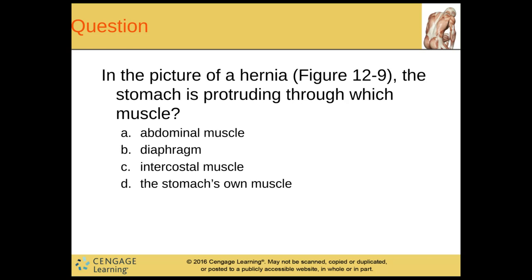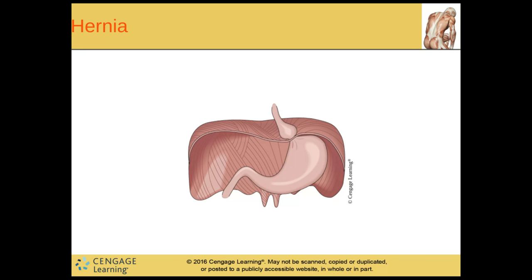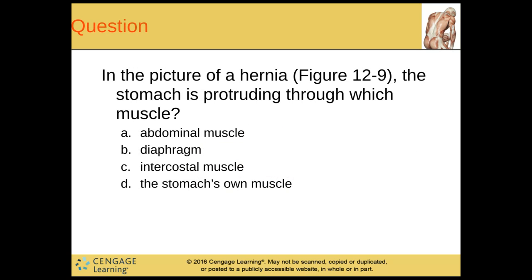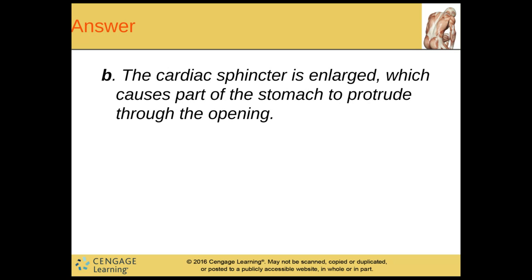Question: in the picture of the hernia, the stomach is protruding through which muscle? I'm going to say that this muscle is helping to keep everything that's supposed to be down here down and everything that's supposed to be up here up — the diaphragm. So the cardiac sphincter is enlarged, which causes part of the stomach to protrude through that opening. Good job.